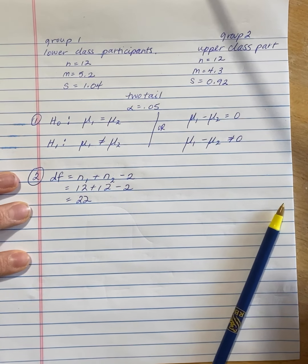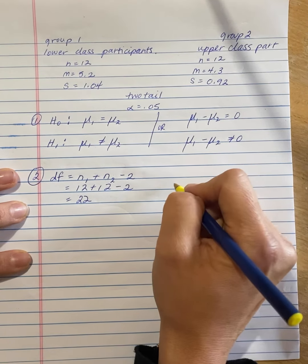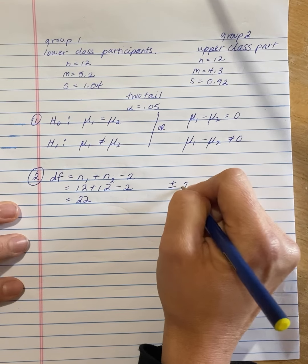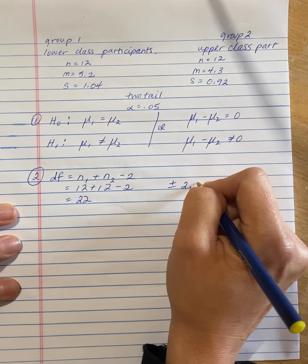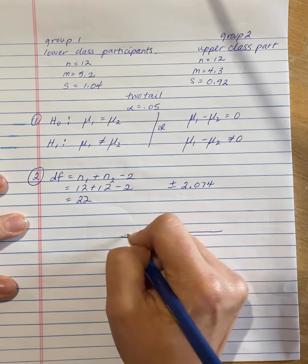And if we look that up on a statistical table, looking at proportion and two-tails combined equals 0.05, and we look down to the row with 22 degrees of freedom, what we see is that our critical values, and we have two because it's a two-tailed test, is plus or minus 2.074.